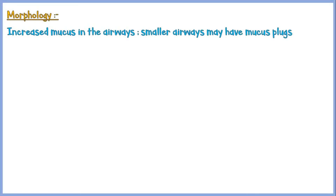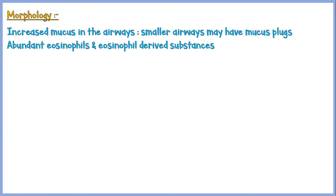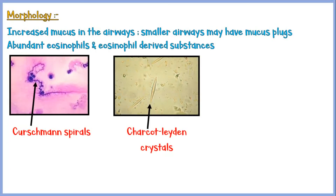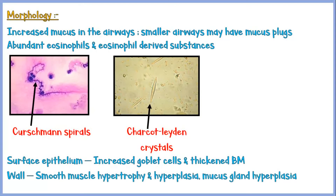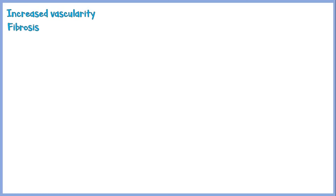Morphological features of the airways in an asthmatic patient include: increased mucus in the airways, with smaller airways sometimes blocked by mucus plugs. Microscopically, abundant eosinophils and eosinophil-derived substances like Curschmann spirals and Charcot-Leyden crystals can be seen in the airways as well as in sputum samples. The surface epithelium shows increased numbers of goblet cells and thickened basement membranes. The bronchial wall shows smooth muscle hypertrophy and hyperplasia, along with mucus gland hyperplasia. Vascularity of the walls increases, and with time some areas may undergo fibrosis due to chronic inflammation. These changes are collectively known as airway remodeling.